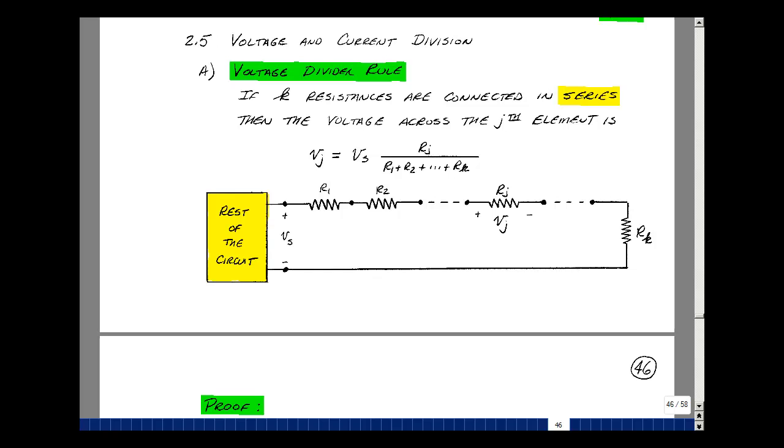Let me state the voltage divider rule. If I have k resistances hooked in series, then the voltage across the j-th element is equal to the voltage Vs times the resistance Rj over the sum of the k resistances. Now, why would that be true?